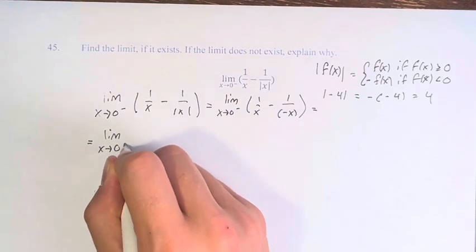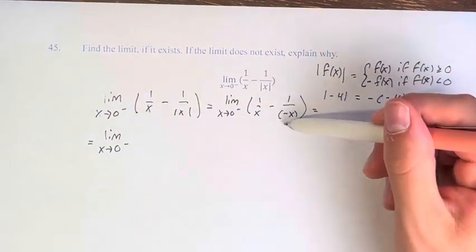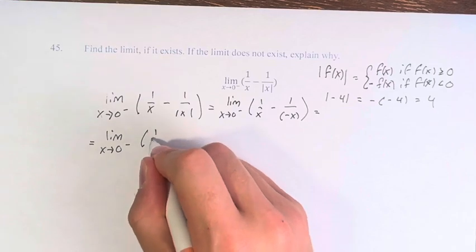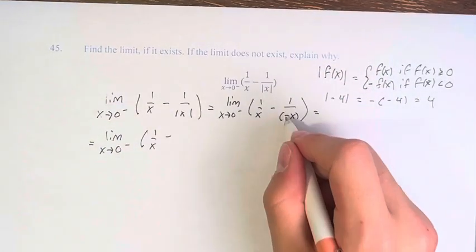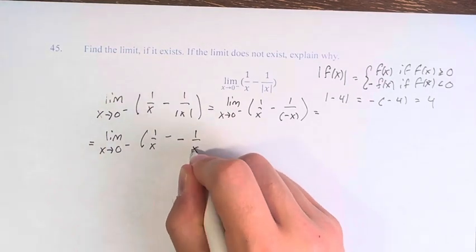So instead of just 1 over x, it's 1 over negative x. So this is 1 over x minus, and then you bring the negative up, negative 1 over x.